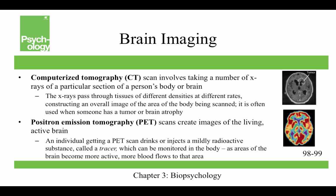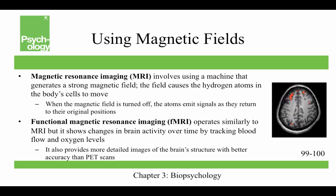How do we image the brain? Computerized tomography, or CT scans, involve taking a number of X-rays of a section of a person's body or brain — the X-rays pass through tissues of various densities at different rates to construct an overall image. CT is often used when someone has a tumor or brain atrophy. Positron emission tomography, or PET scans, create images of the living active brain — an individual drinks or injects a mildly radioactive tracer that can be monitored as blood flows to more active brain areas. Because PET involves exposing the brain to radiation, it's not used much anymore and has mostly been replaced by fMRI.